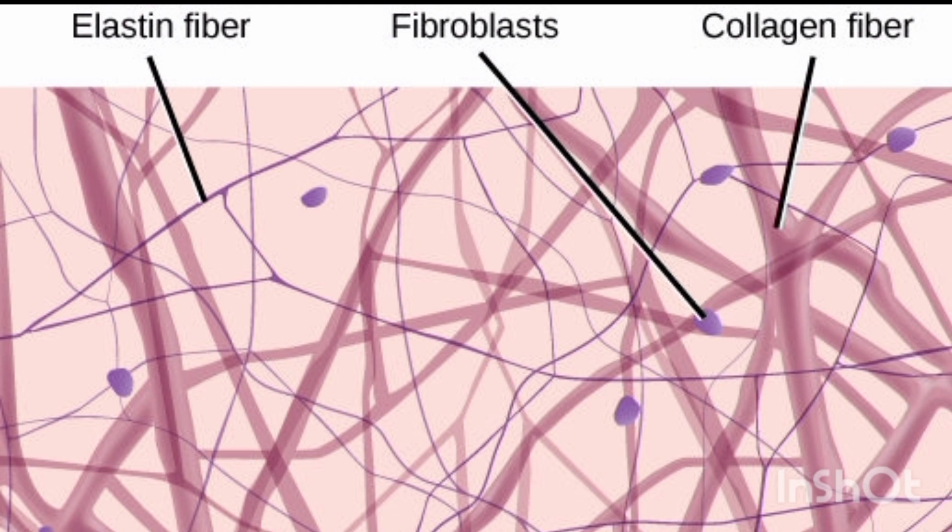The ground substance of the loose connective tissue is relatively fluid-like and occupies many small areas called areolae, in which no structure is seen in ordinary H&E stained preparations, because the ground substance is dissolved out by alcohol and xylene. Therefore, the loose connective tissue is also referred to as loose areolar connective tissue.